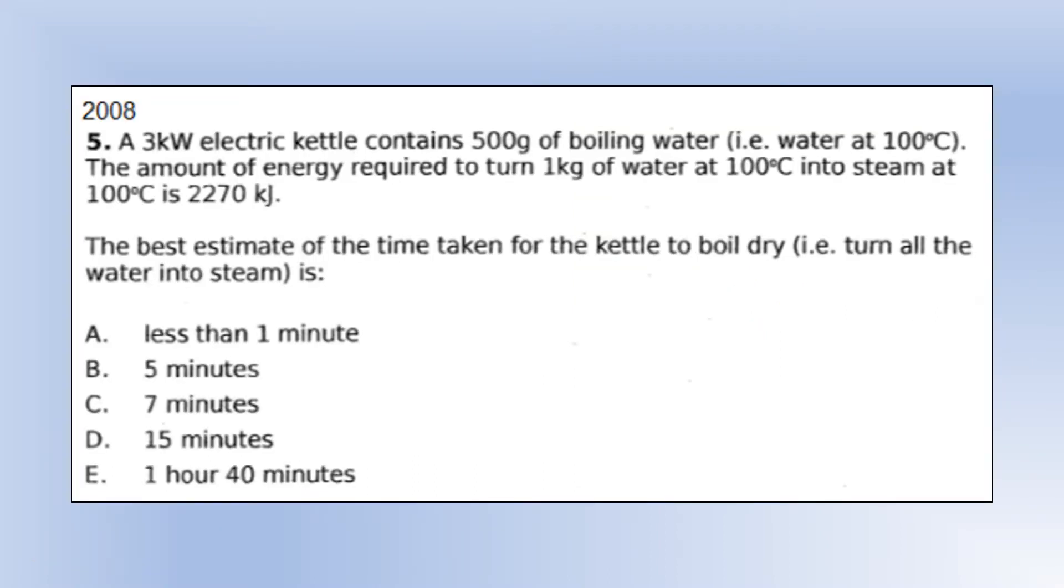A 3 kilowatt kettle contains 500 grams of boiling water. The amount of energy required to turn 1 kilogram of water at 100 degrees into steam is 2,270 kilojoules. The best estimate for the time taken for a kettle to boil dry is... We can do the calculations for this. The thermal energy supplied, we can do power times time. And the amount of energy is Q equals ML. Those two are going to be equal to each other. Rearrange to make T the subject. Plug the numbers in, remembering to convert from kilojoules into joules and from kilowatts into watts. That gives us 378 seconds, which is about 6.3 minutes. So, the closest option we have here is C, because realistically, we're going to lose some energy to the surroundings, so the time would be slightly longer.